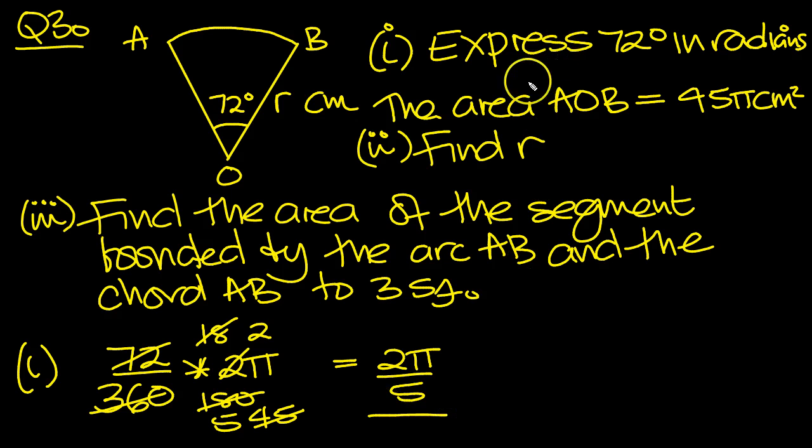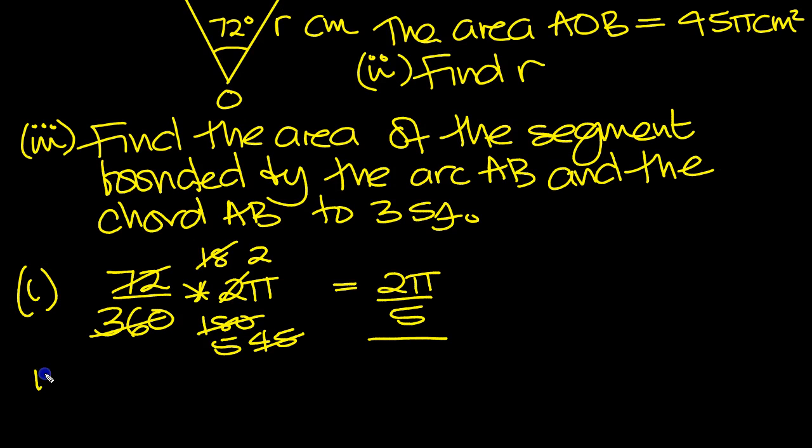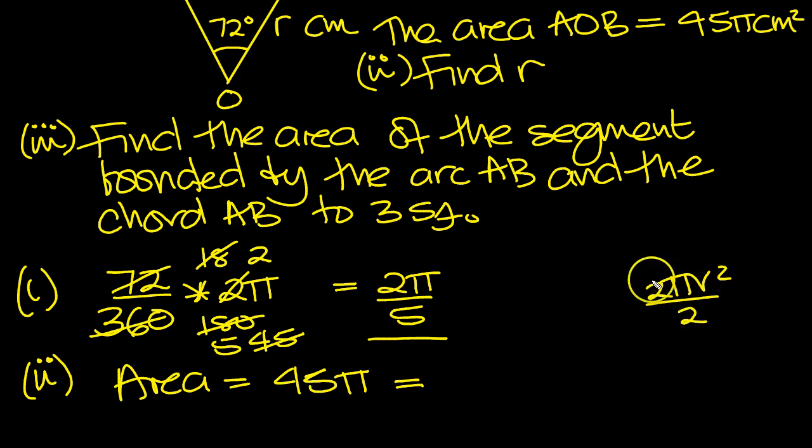So that's that. The area AOB is 45 pi centimeters squared. Find R. So the area is equal to 45 pi centimeters squared. Now the area of a whole circle is pi R squared. As a fraction of 2 pi, it could be written like this. But that's still pi R squared.